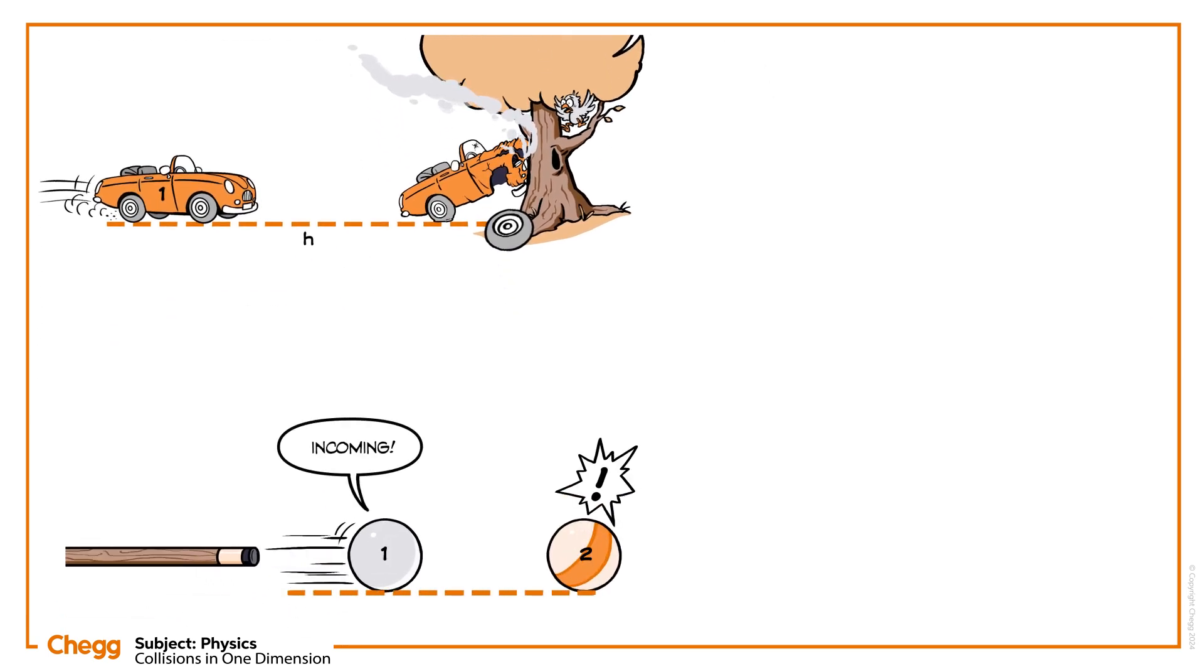If these two objects and their initial and final velocities lie in one line, we call it a one-dimensional collision. All the variables of motion lie in the same dimension.